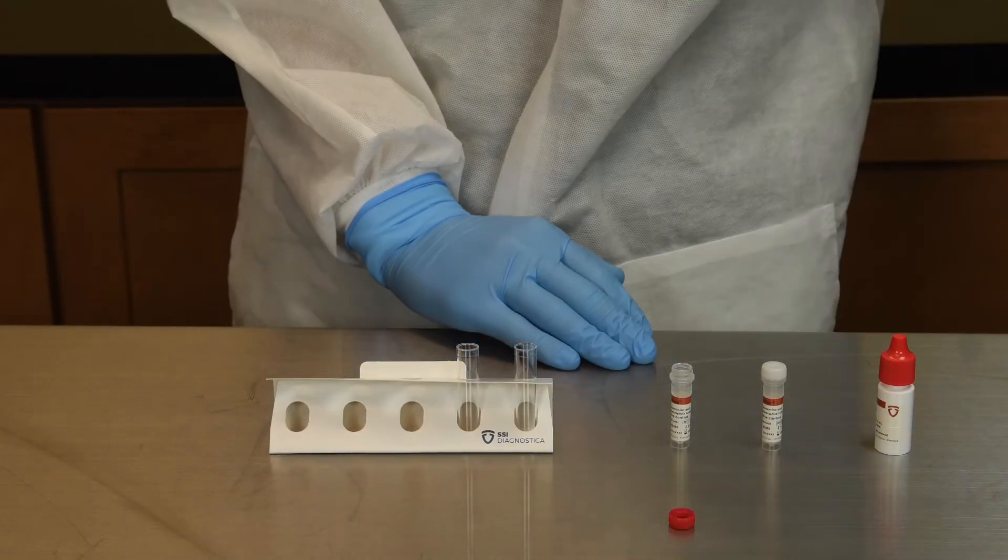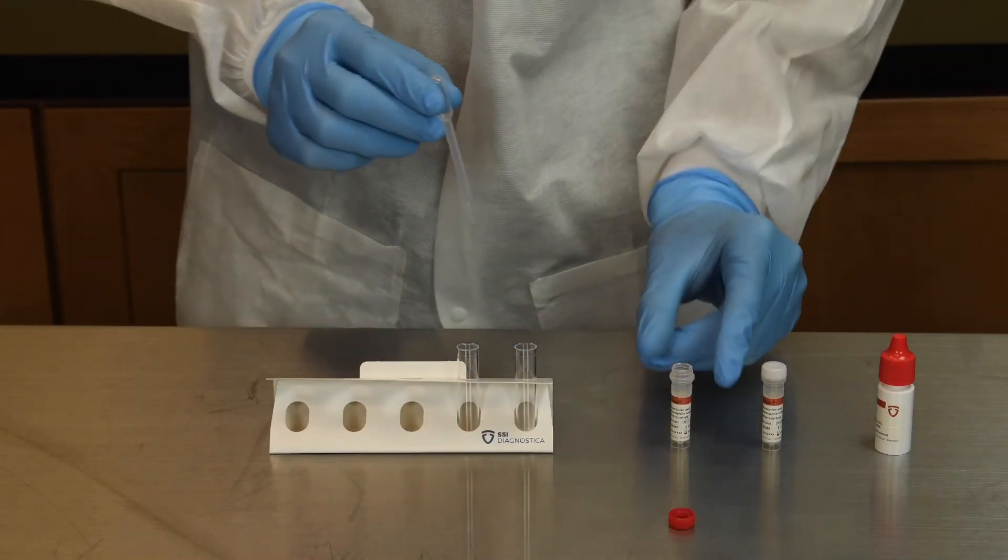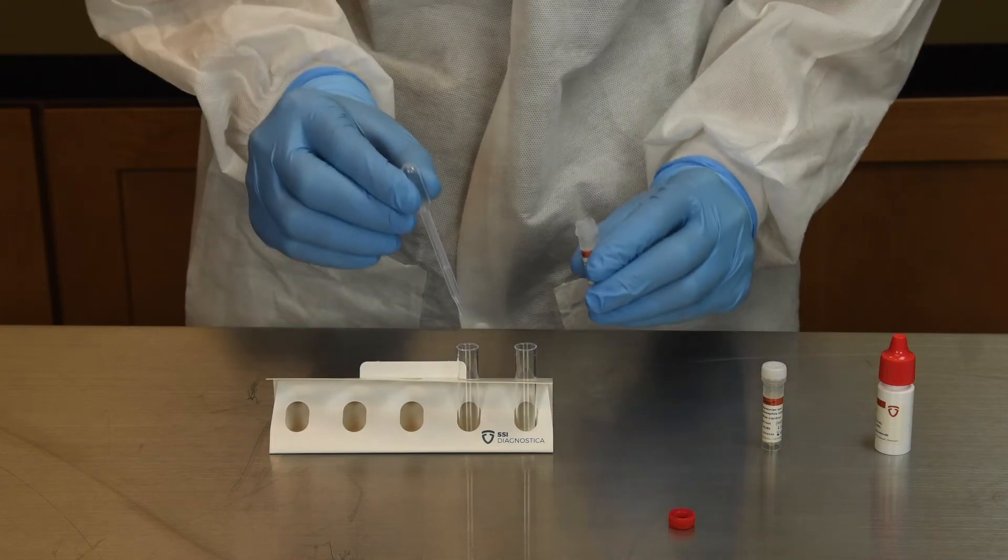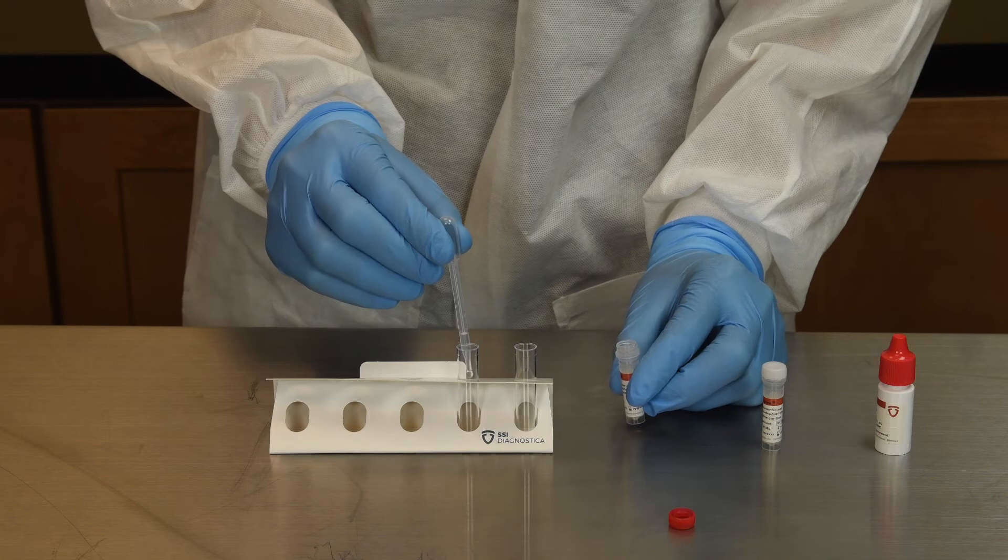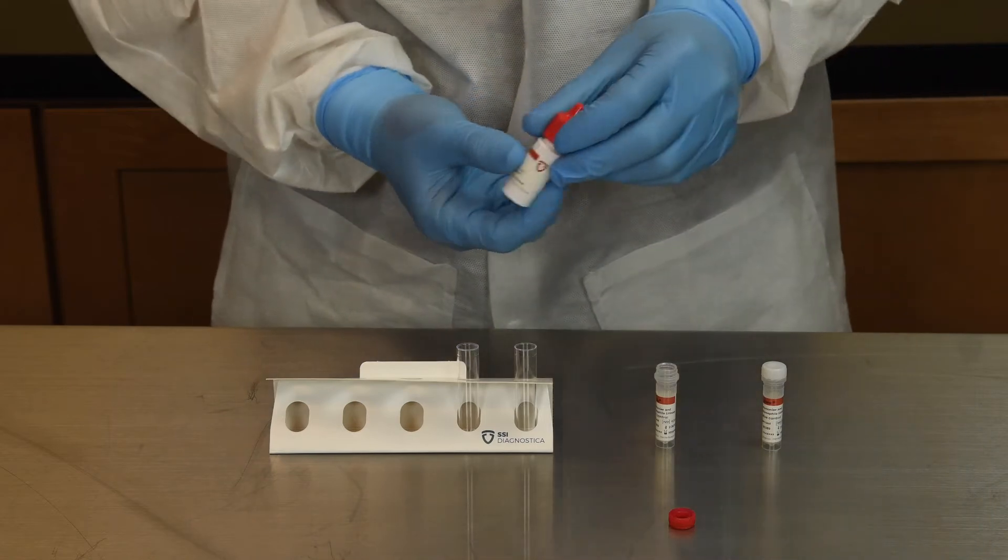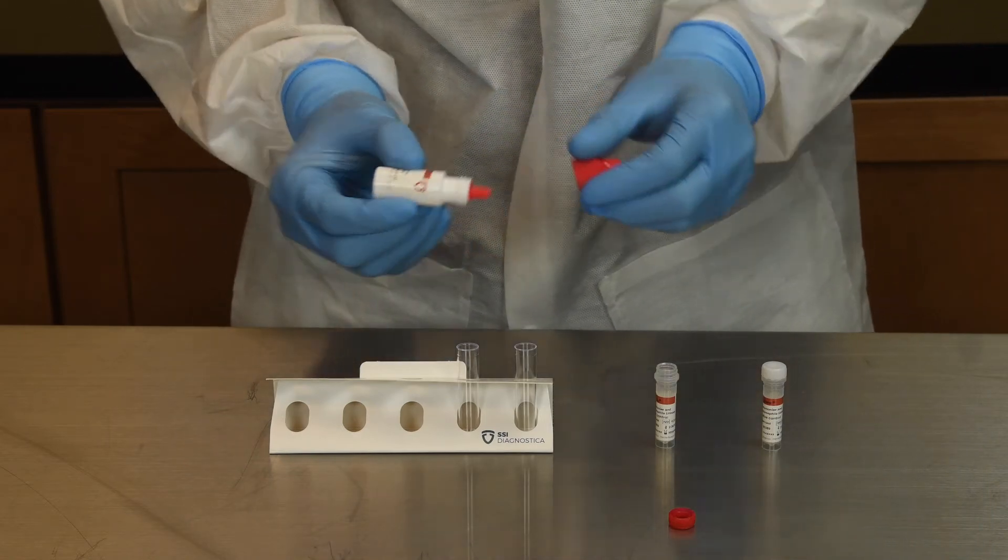Before starting a new kit, please perform a positive and negative control. This is to ensure the ImmuView test works as intended. You will need two ImmuView test strips to perform the controls. This is why there are 22 tests in each kit.